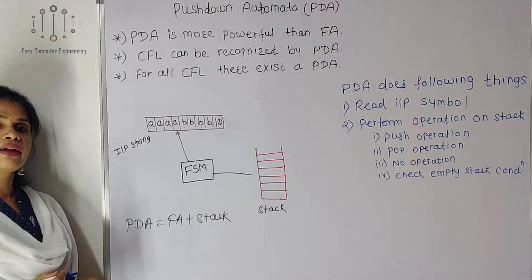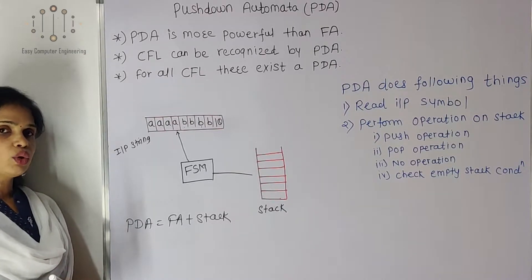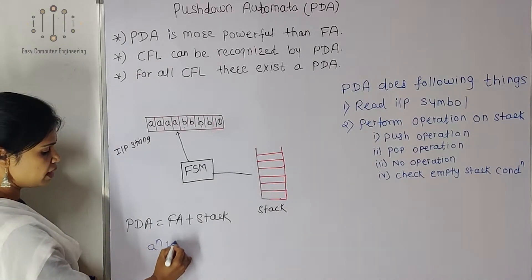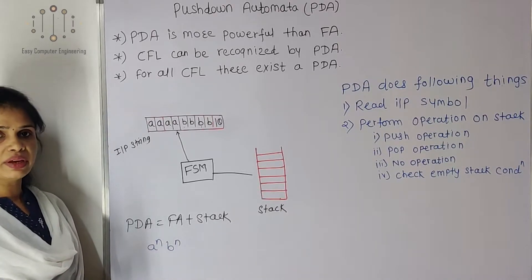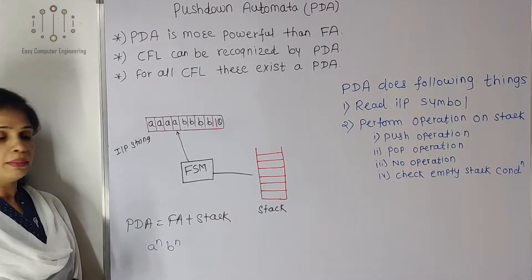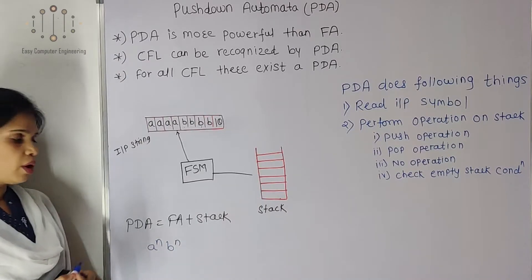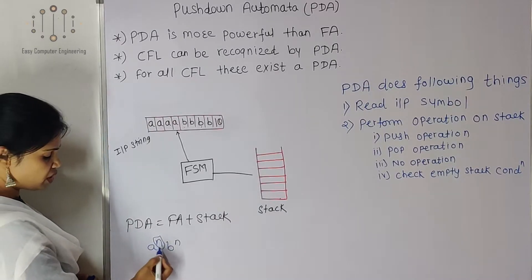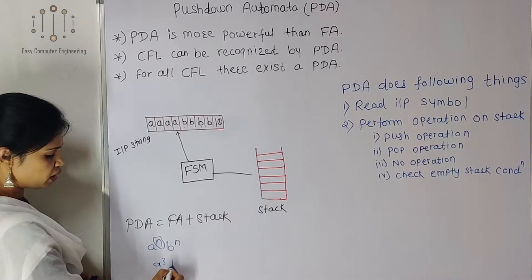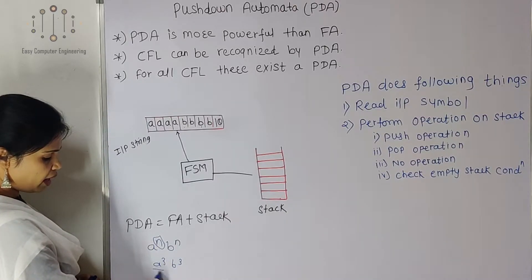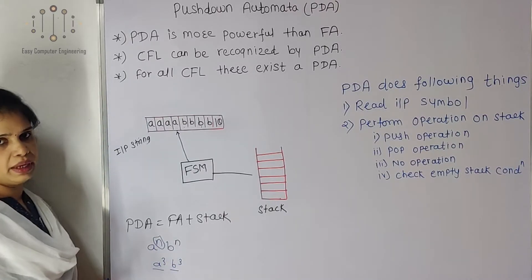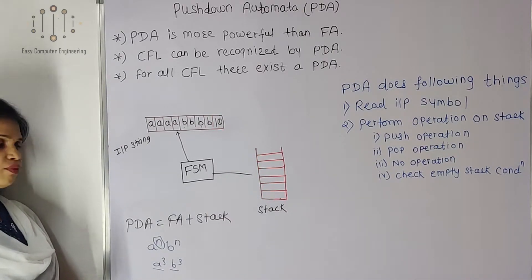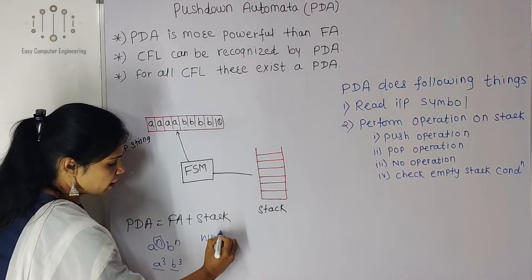Context-free languages (CFL) can be recognized by PDA. For example, the language Aⁿ Bⁿ can easily be represented using PDA, but this is not possible using finite automata. In finite automata we cannot store the count N — for example, if my string is A³ B³, I need to count the A's and verify the same count of B's, which finite automata cannot do.